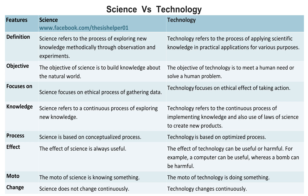Science refers to a continuous process of exploring new knowledge, whereas technology refers to the continuous process of implementing knowledge and also the use of laws of science to create new products.